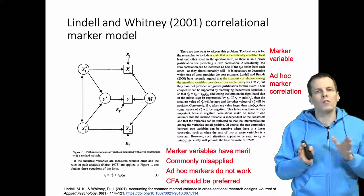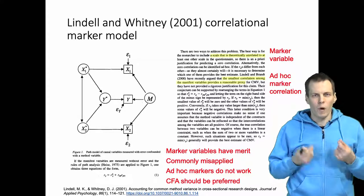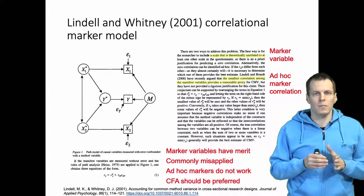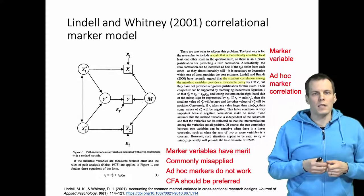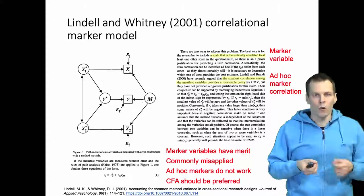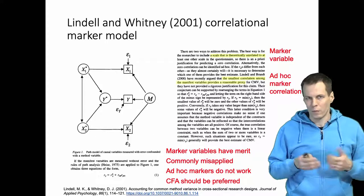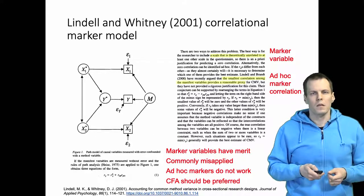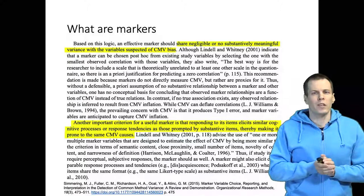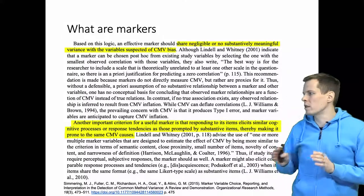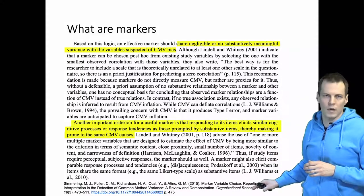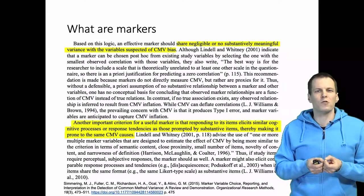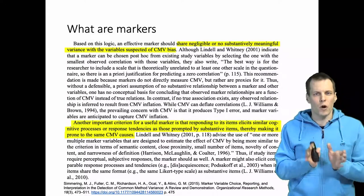There are a couple of ways of using markers, and the confirmatory factor analysis approach is currently the preferred way over the correlational technique. The idea of a marker variable is explained really well in an article by Simmering and co-authors, who explain that the marker should have two key properties.